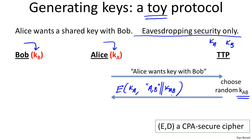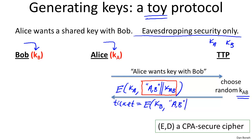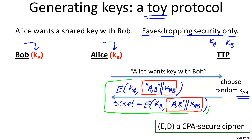To be clear, the message that gets encrypted is K_AB plus the fact that this key is supposed to be a shared key between Alice and Bob, and this whole message is encrypted using Alice's secret key. The other part of the message the TTP sends to Alice is what's called a ticket — a message encrypted for Bob. The ticket is an encryption under key K_B of the fact that this key is to be used between Alice and Bob, with K_AB concatenated. These two messages are sent from the trusted third party to Alice. The encryption system E used here is a CPA-secure cipher.